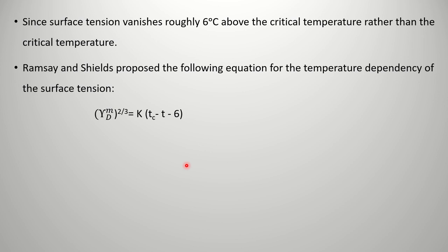Ramsay and Shields have slightly modified the equation and added a factor of minus 6: Tc minus T minus 6. This is the Ramsay and Shields equation for the temperature dependency of the surface tension. The equation has a slight modification, minus 6.